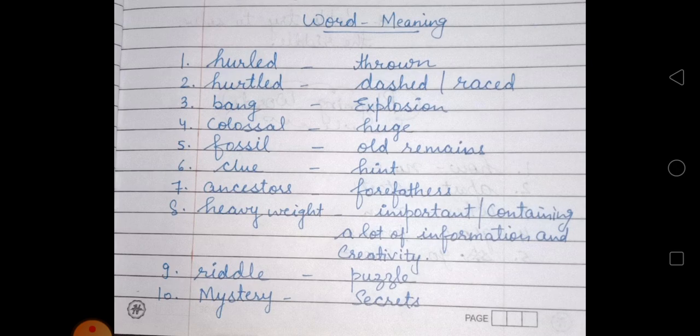So dear students, these are the word meanings. Now let's start with the rhyming words of this poem. Rhyming words kia hotate hai? Ki jab doh words ki sound similar hoti hai, same sound aati hai, usko hum rhyming words kahate hai.